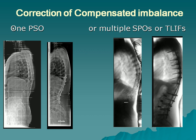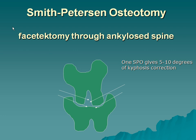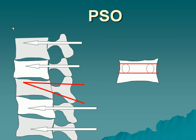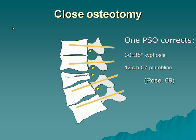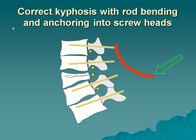You can correct this with one PSO, or with multiple T-lifts — I prefer T-lifts today; I think it's easier, quicker, and gives better correction. With a Smith-Petersen osteotomy you get five to ten degrees at best, which is way too little if you want to correct 30 to 40 degrees. If you want 35 degrees, do a PSO — it gives on average 35 degrees. It's a great operation: put in the rod and bend it down. The way you bend the rod is the way the spine is going to wind up, so you have to bend the rod correctly.